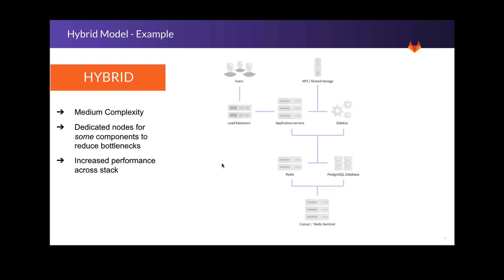As your demand increases, the hybrid model allows for a similar architecture to the horizontal one, but it breaks out high-load components into their own nodes. As you can see in this example, it's the same as the horizontal one, except we have Sidekiq — the background job service — split out into its own dedicated node. This is important for preventing bottlenecks that may build up in this particular task.